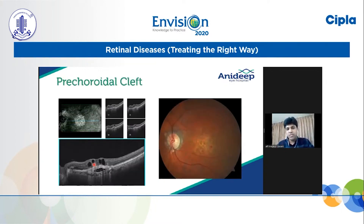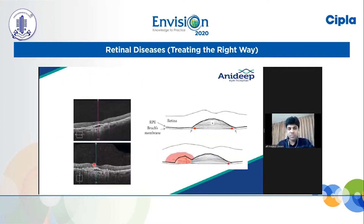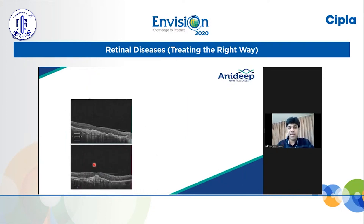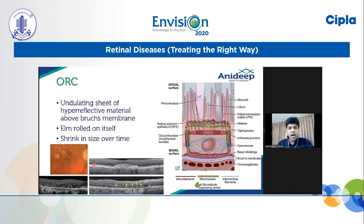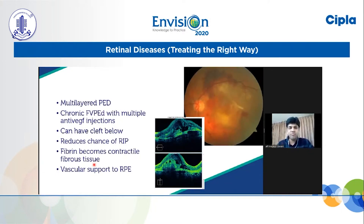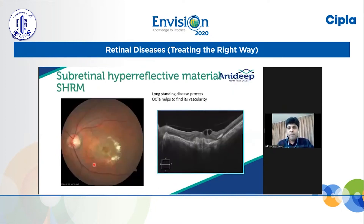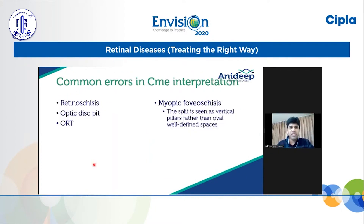Outer retinal tubulations are a poor negative biomarker in AMD treatment that can be picked up with modern OCTs. This is a chronic CNVM we treated, and the pre-choroidal cleft persisted. Outer retinal corrugations — based on the histology of basal infoldings — are again a poor marker in the AMD process. A multi-layered PED shows that this patient has already received multiple anti-VEGF injections. With SHRM we can prognosticate, and we can use OCTA to see whether it is vascularized or non-vascularized.